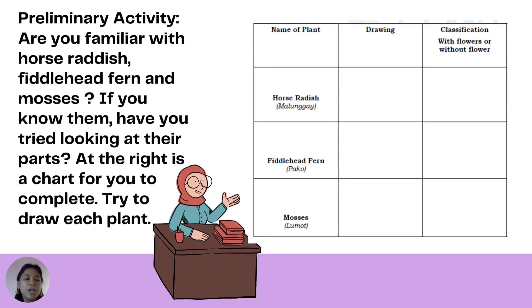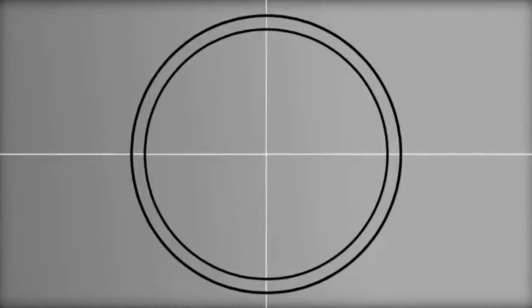Preliminary Activity. Are you familiar with horse radish, fiddlehead fern, and mosses? If you know them, have you tried looking at their parts? There is a chart for you to complete. Try to draw each plant. The answers are: horse radish or malunggay — flowering; fiddlehead fern or bako — non-flowering; and mosses or romot — non-flowering.